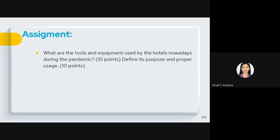For your assignment: What are the tools and equipment used by hotels nowadays during the pandemic? The hospitality industry has been greatly affected by the pandemic. Hotels and management have had to improvise their services so that guests can still travel and stay at hotels with extra precautions. Identify these tools and equipment, define their purpose, and explain their proper usage. The total points for the assignment is 20 points. Thank you everyone, I hope you learned something from our discussion. If you have any questions, you can message me directly. Goodbye and God bless.